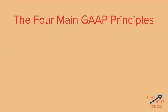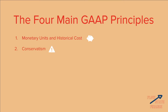So now let's talk about the four main GAAP principles. The first is monetary units and historical costs. The second is conservatism. The third is consistency. And the fourth is full disclosure. Let's go over each of these in detail.